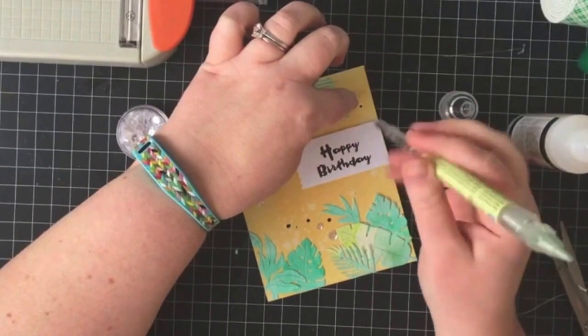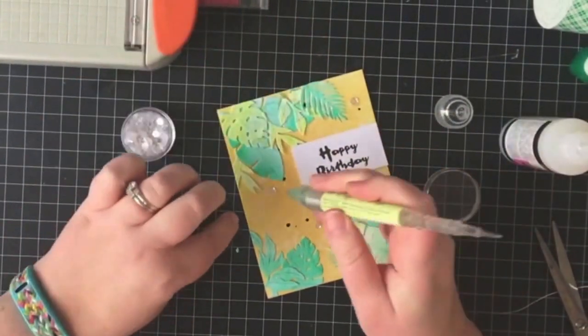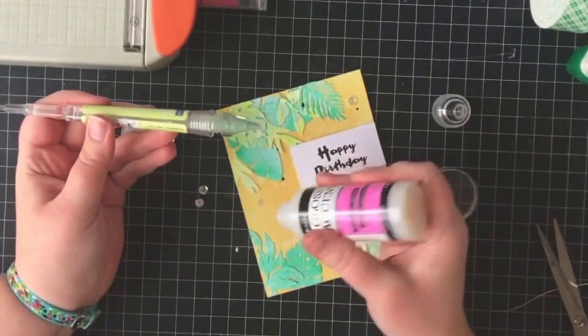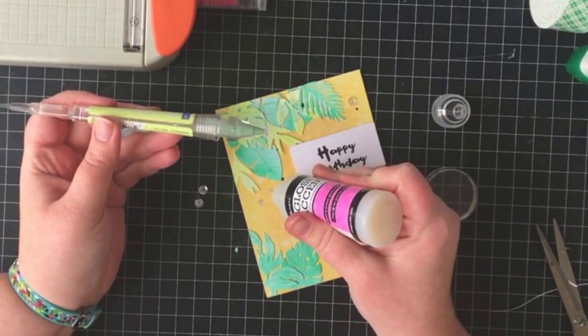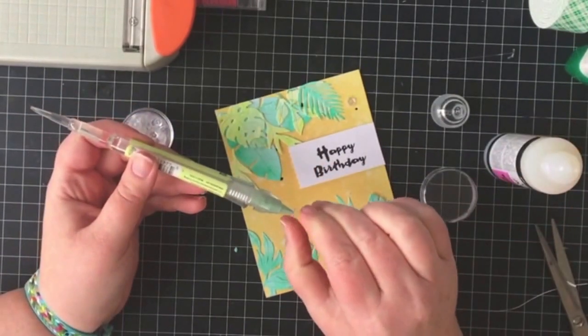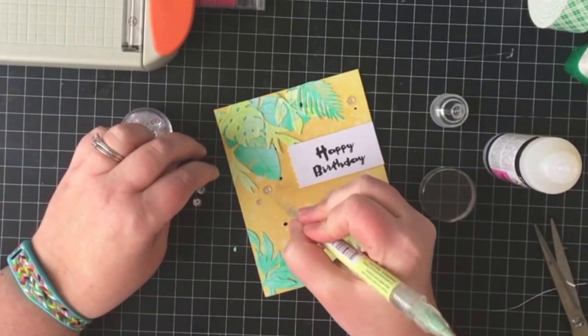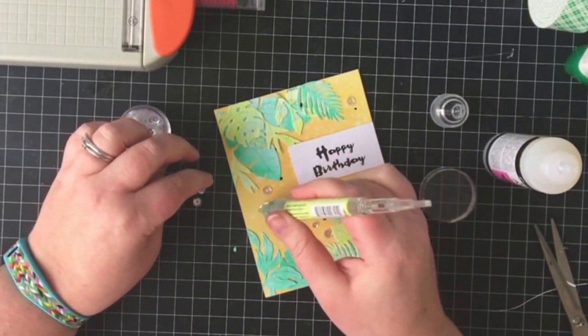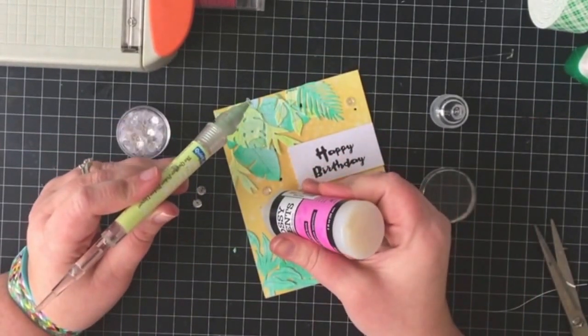And my final step just to finish off the card and add a little bit of sparkle because I love me some sparkle is to add some clear sequins and I'm using glossy accents as the glue to adhere them to the card.